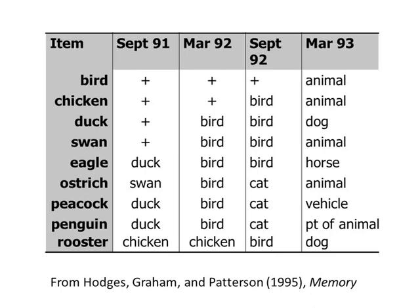We see two general patterns in these responses. First, we see confusion of semantically related items — when incorrect names are produced, they tend to refer to similar kinds of things, in this case other birds, or later on, other kinds of animals. Secondly, we see a loss of relatively specific names but preserved knowledge of more general names, such as bird and animal.